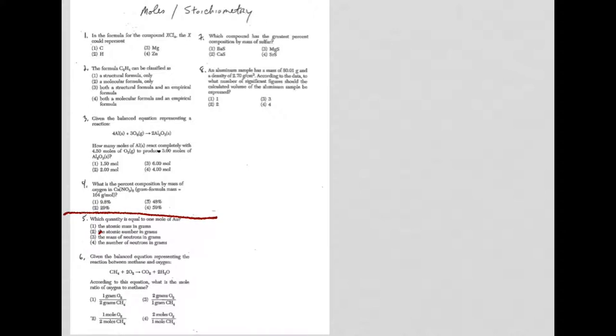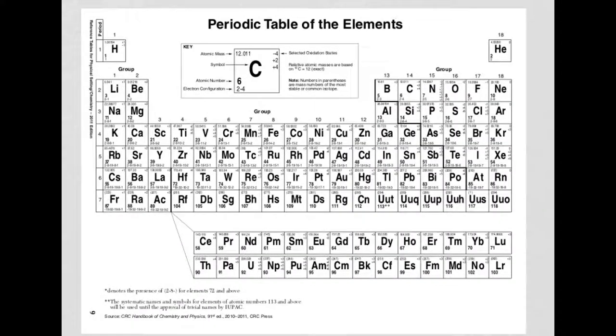Question one is asking you about a formula, XCl4, and what X could represent. Chlorine is a halogen. It's in group 17, needs one more electron to be like a noble gas. So it likes to gain one, or when it's sharing electrons, have them close to itself.